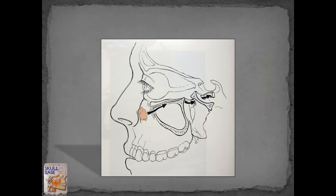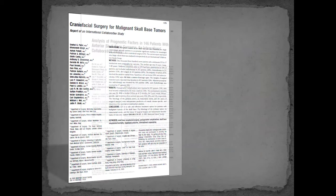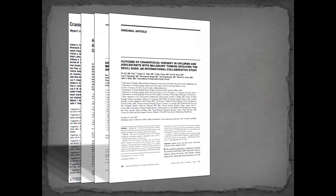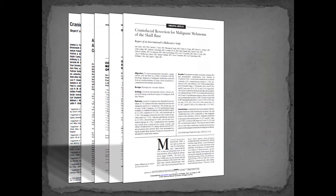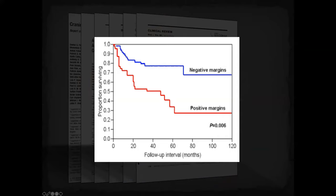Regarding skull base outcomes: in 2008, a multicenter study combining 17 departments accumulated about 1,300 skull base cases analyzed by pathology and histology. They found that despite positive margins in a third of cases, mortality from complications was still low, though recurrence remained high. Comparison slides show outcomes with negative versus positive margins, and negative versus positive perineural invasion.